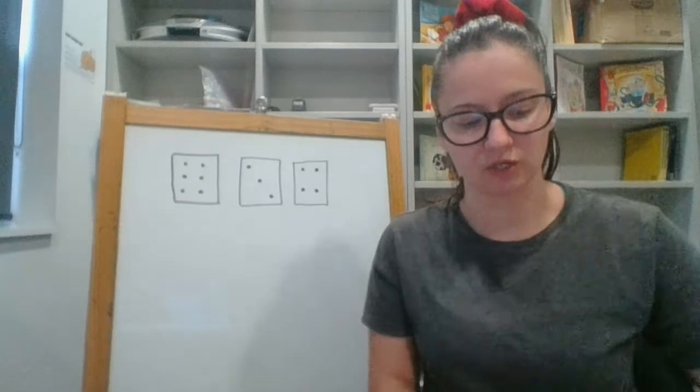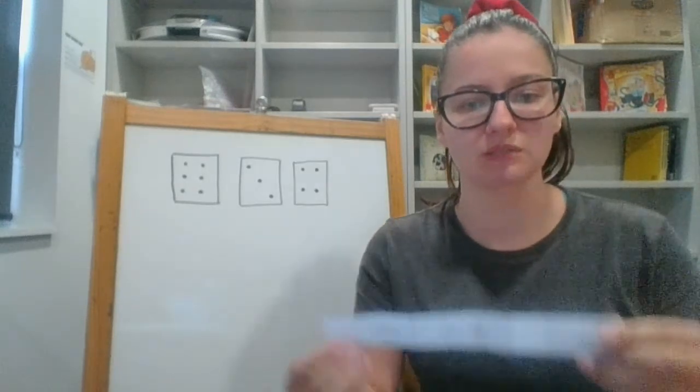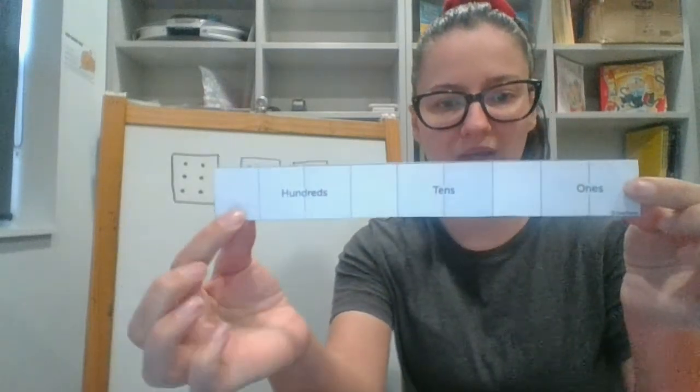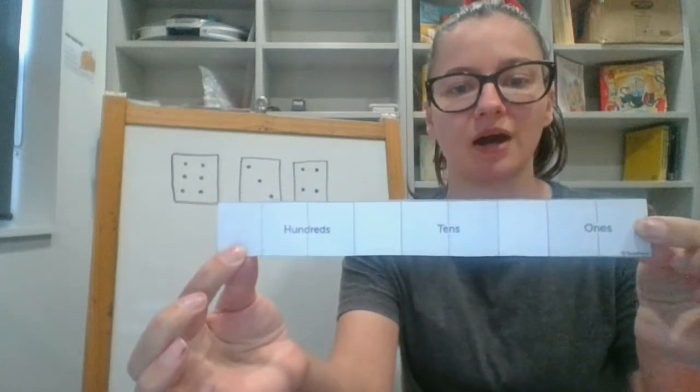So the first thing we're going to do is cut out our number expander. You should cut your expander out into a nice long strip just like mine.